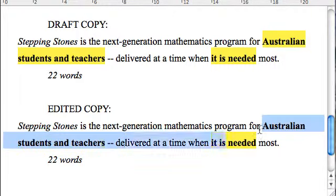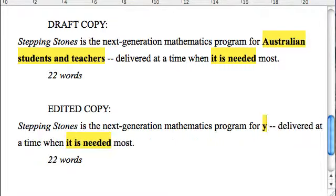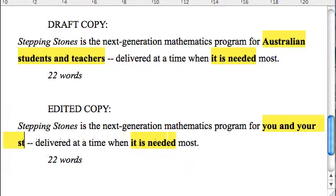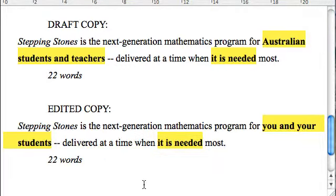The most direct and basic way we can apply the you rule here is pretty obvious. Instead of Australian students and teachers, we talk about you and your students. Again, we haven't affected the word count. It's still 22 words. But I think you can see that we have moved it from a general, impersonal address to a much warmer, more personal, more emotionally involving category, you and your students.